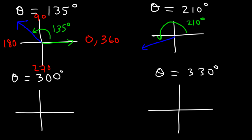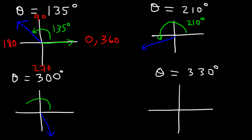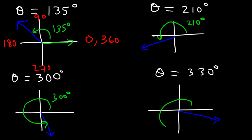For 300 degrees: it's between 270 and 360, but closer to 270, the negative y-axis — so it falls in that vicinity. This is the angle of 300 degrees. And 330 is closer to 360, so this is going to be 330 degrees.